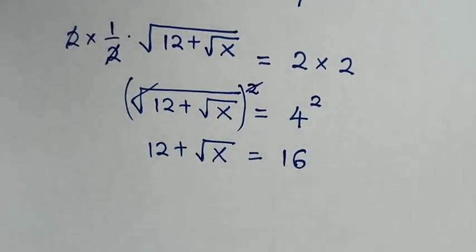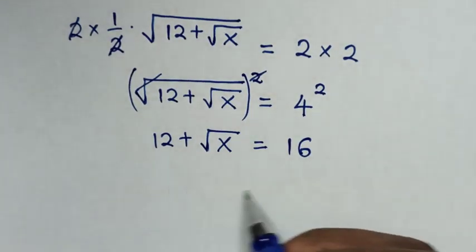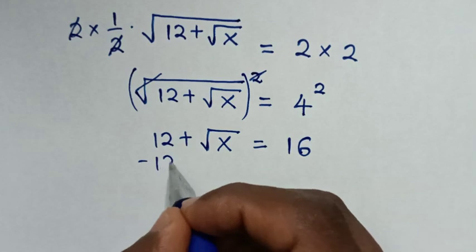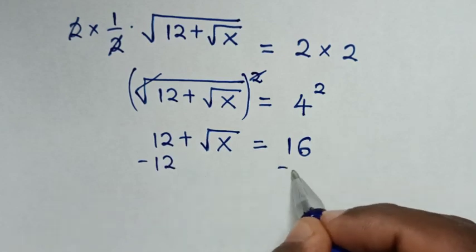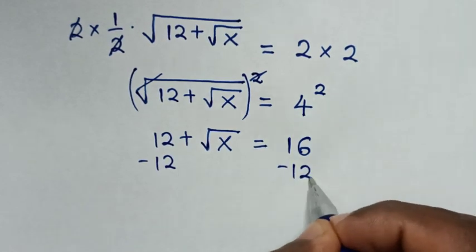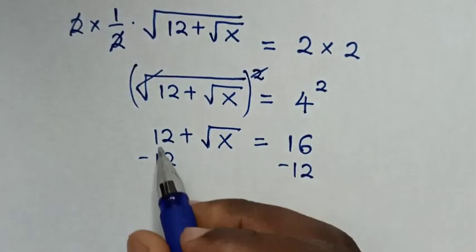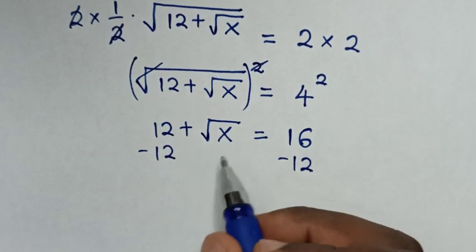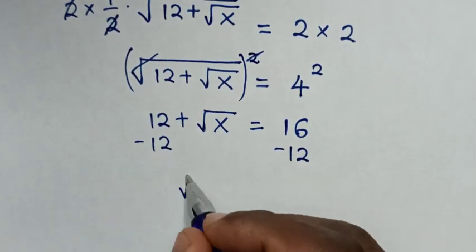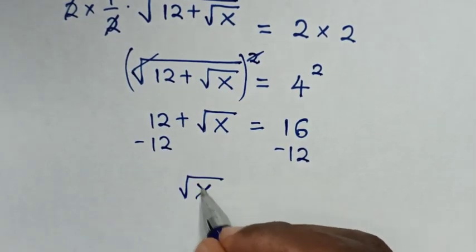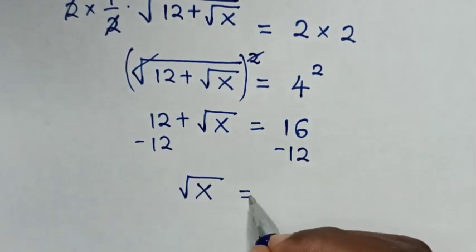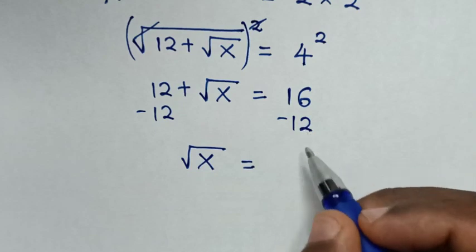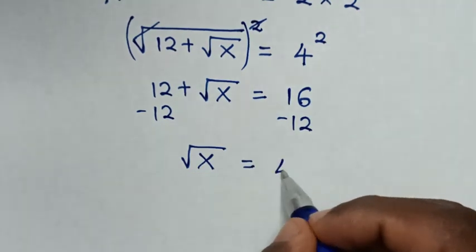Then we'll take this 12 to the right side, so we'll subtract 12 from both sides. 12 minus 12 is 0. So it will be: square root of x is equal to 16 minus 12, which is 4.